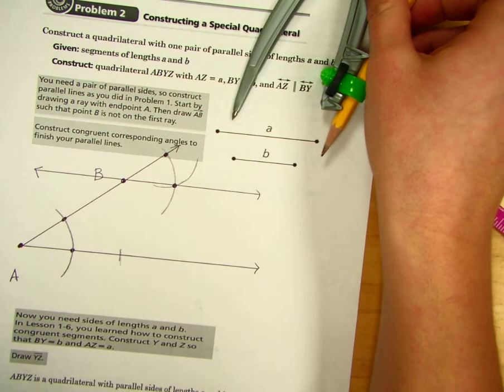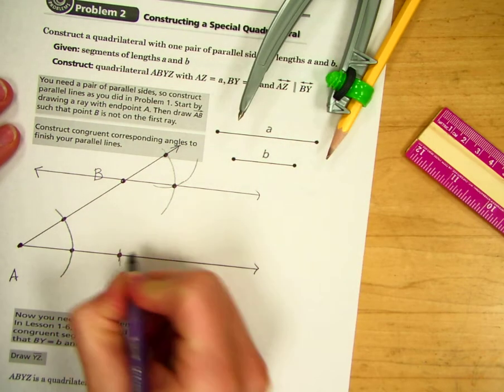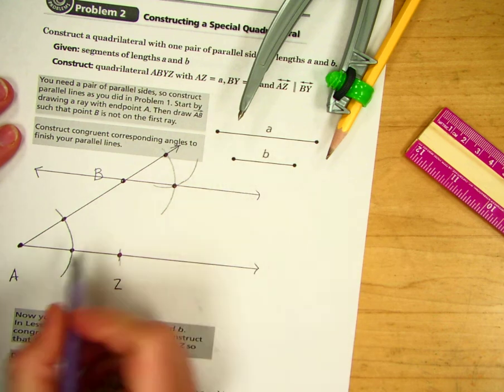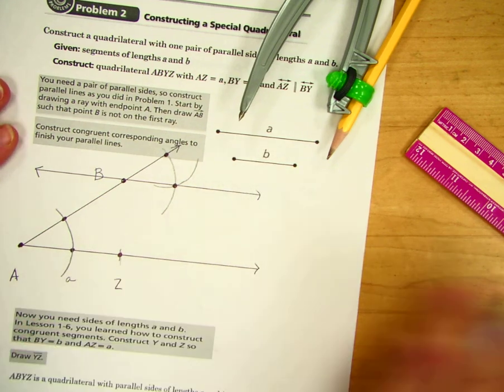We are going to label that Z for the intersection. So now we know that AZ is equal to the length of A. I'll just mark that down there.